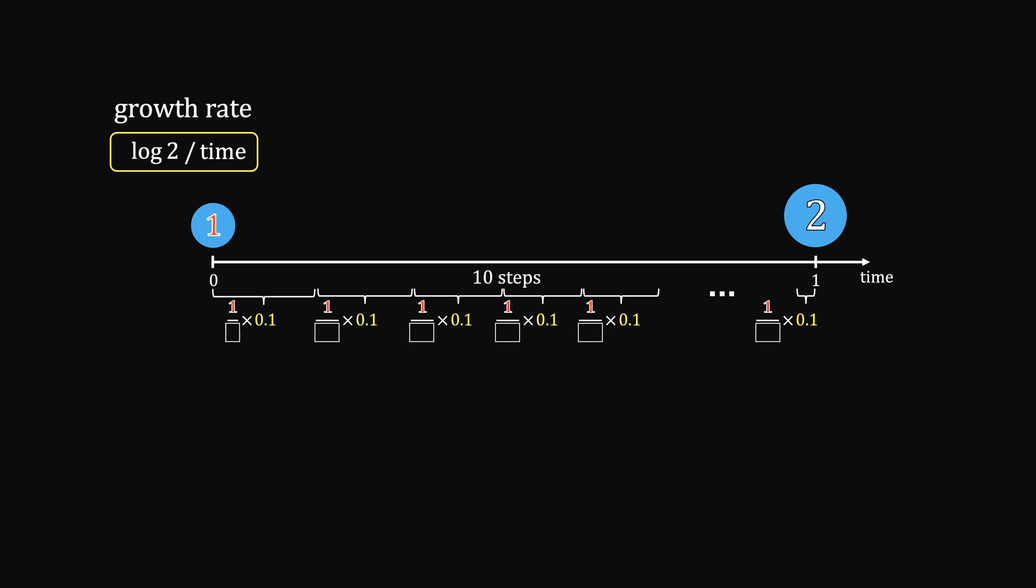The trick is to find out the weight coming from the starting unit. In the first step, 100% comes from the starting unit, becoming 1.1. Step 2, 1 over 1.1 comes from the starting unit, becoming 1.2.